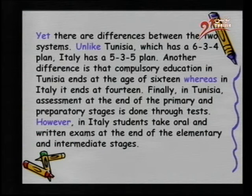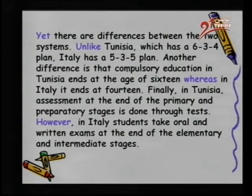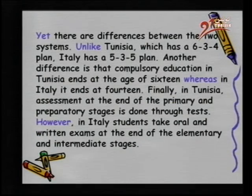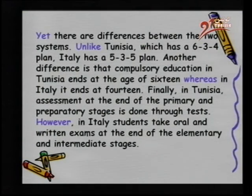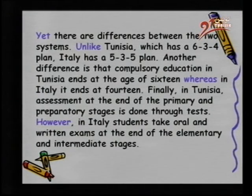Yet, there are differences between the two systems. We should start a new paragraph. Unlike Tunisia, which has a 6-3-4 plan, Italy has a 5-3-5 plan. Another difference is that compulsory education in Tunisia ends at the age of 16, whereas in Italy it ends at 14. Finally, in Tunisia, assessment at the end of the primary and preparatory stages is done through tests. However, in Italy, students take oral and written exams at the end of the elementary and intermediate stages.